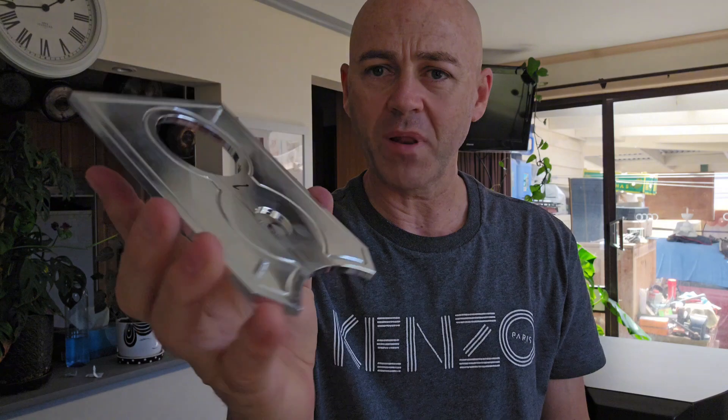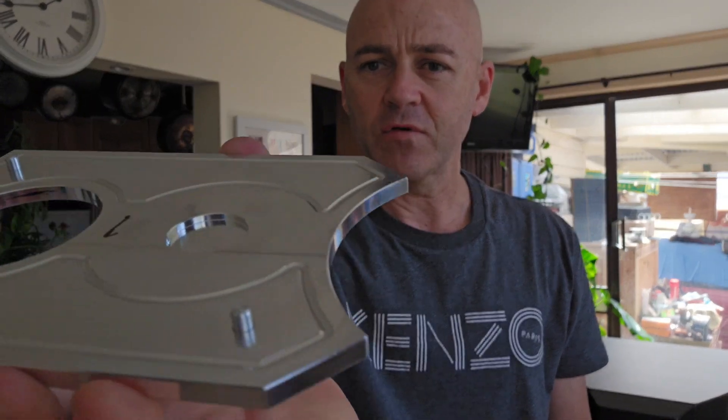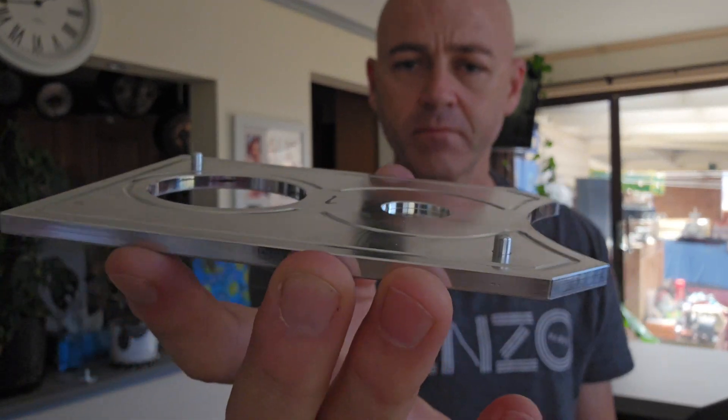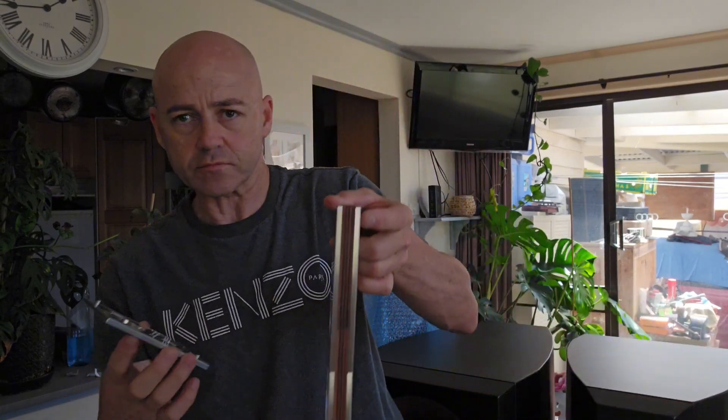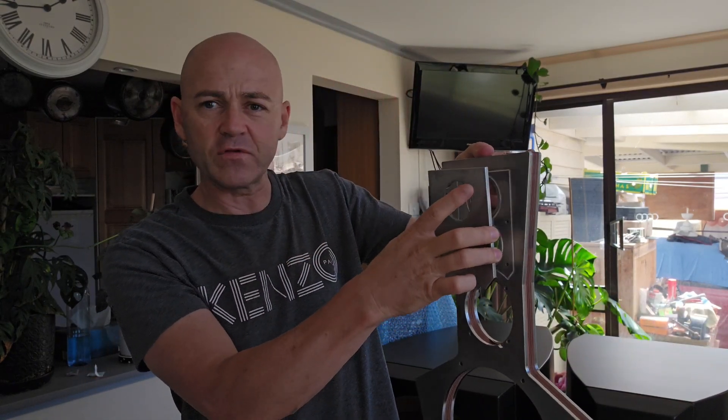Then with the tweeter baffle plates, we have two dowels in there as you can see, and they will be going into the correct positions here on the baffle here.